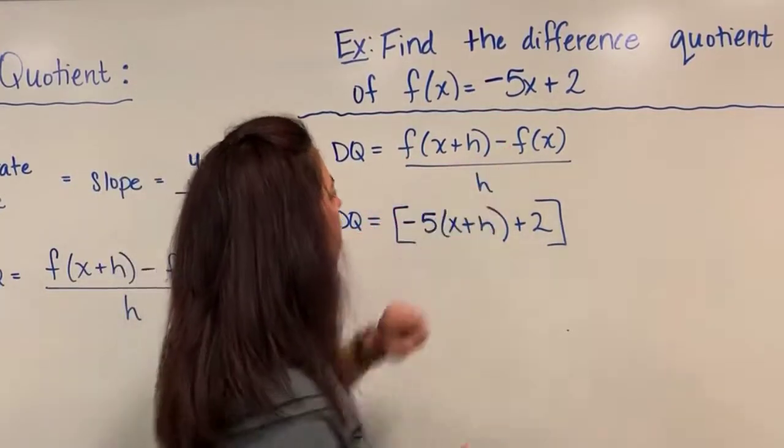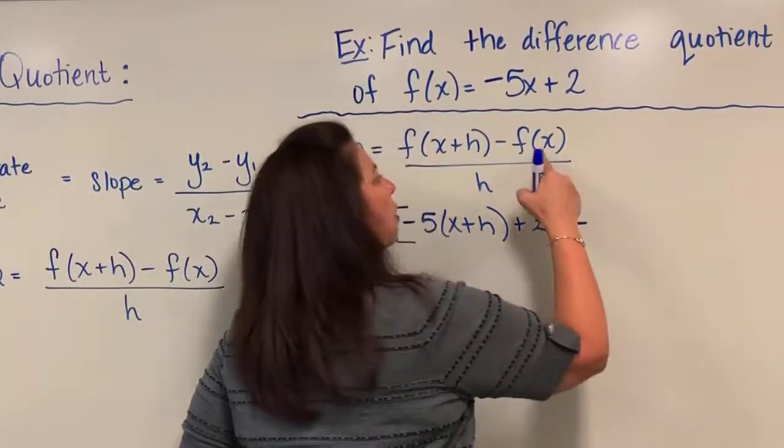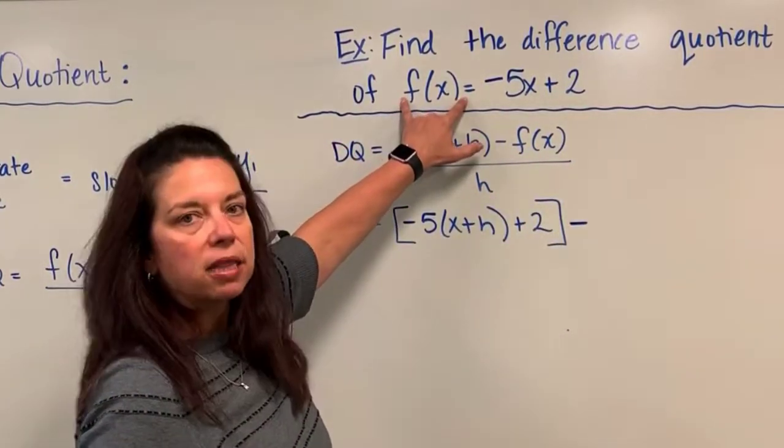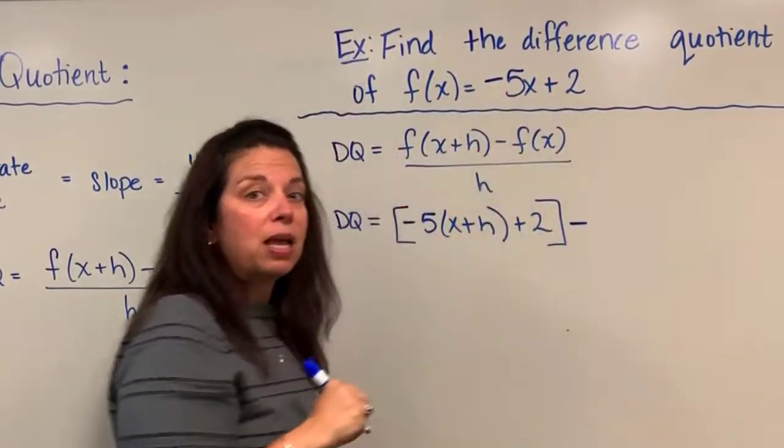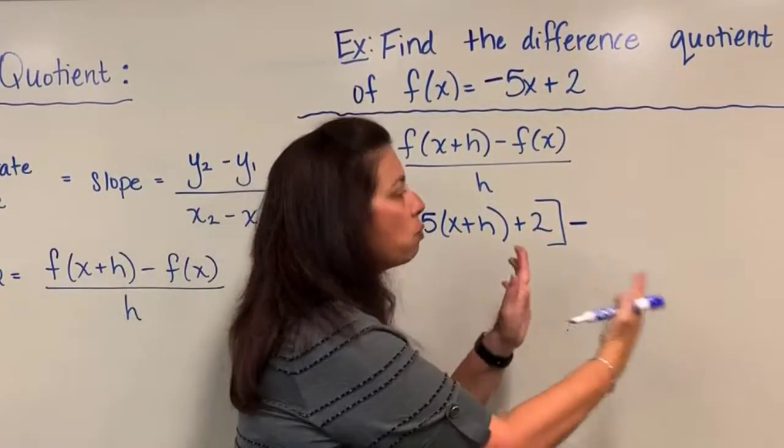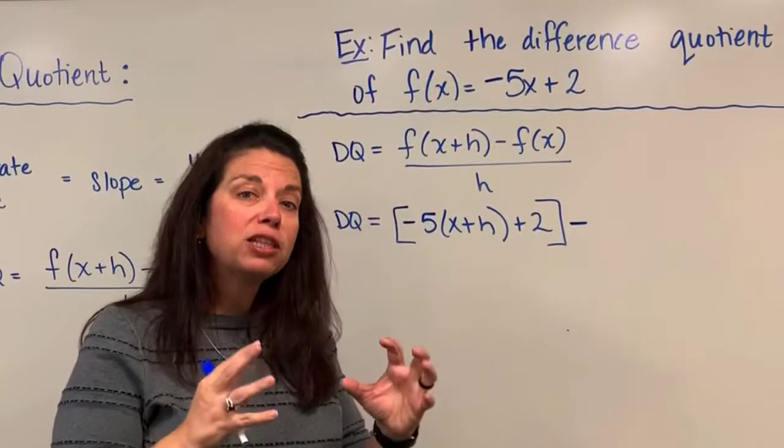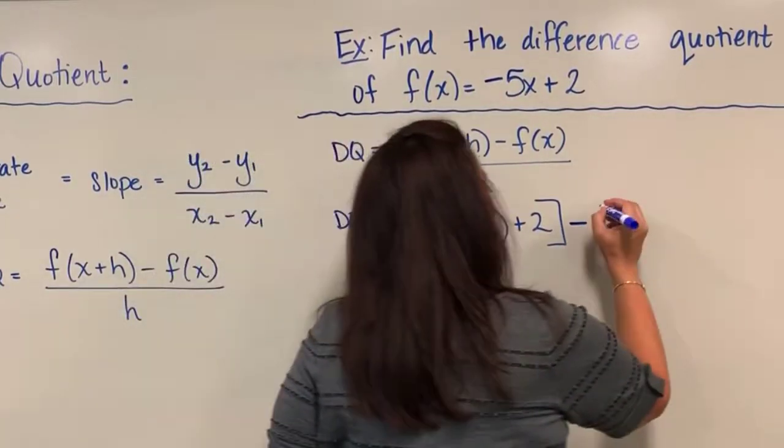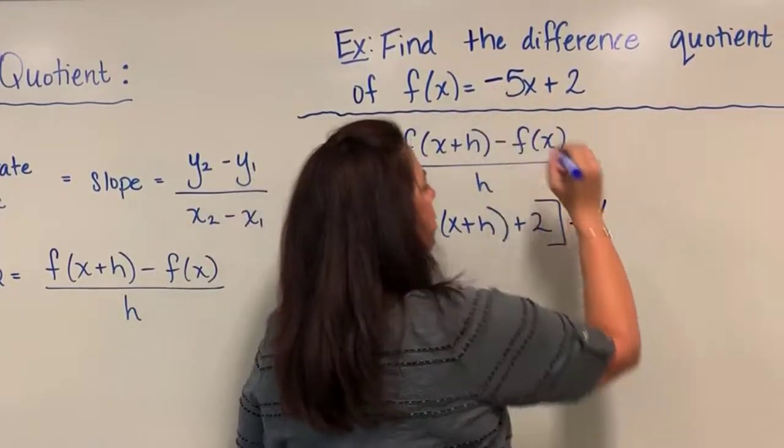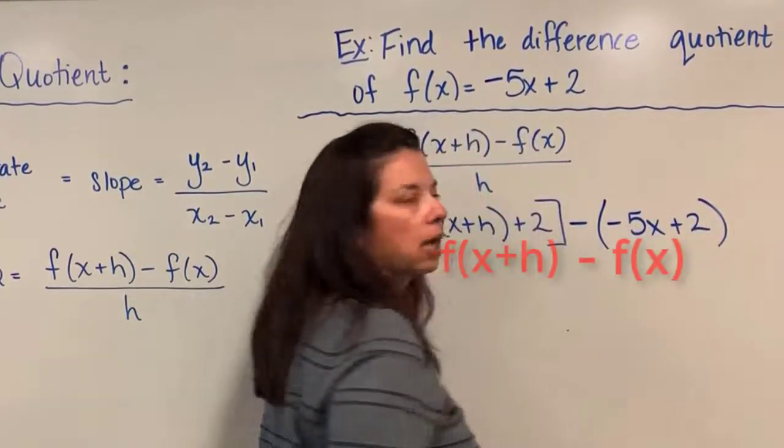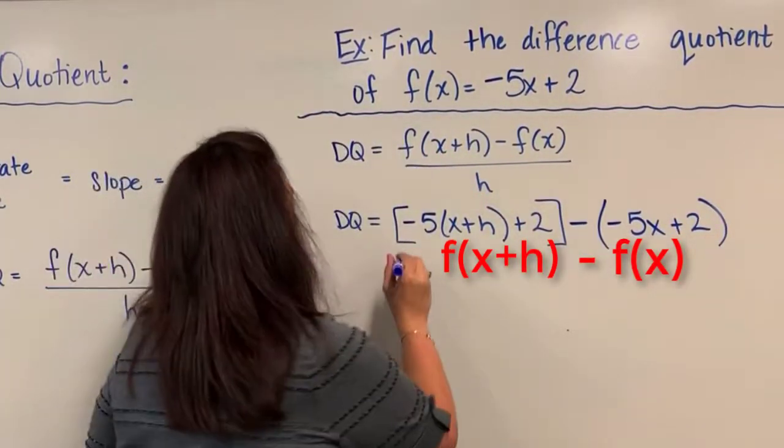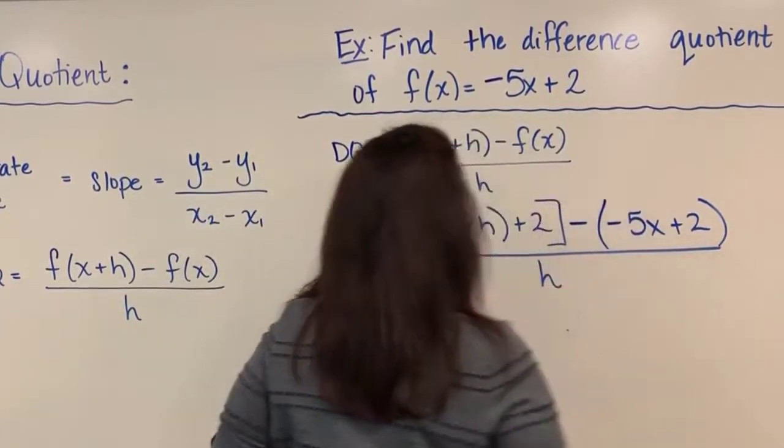Now put into the formula, I'm supposed to subtract off f of x which was given to me here in the beginning. So I will subtract off this whole function, but be careful because you are subtracting off more than just one term, you need to make sure that you write that in parentheses. So open parentheses and then now insert your f of x function inside here, and then we have all of this being divided by h.